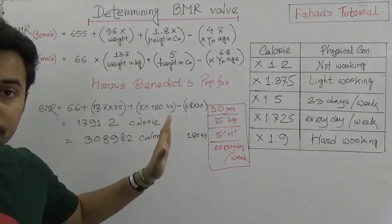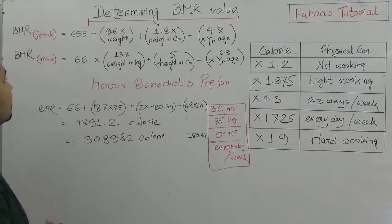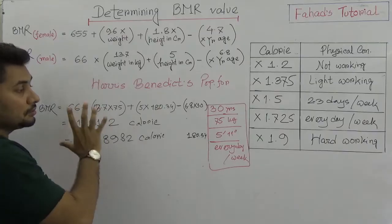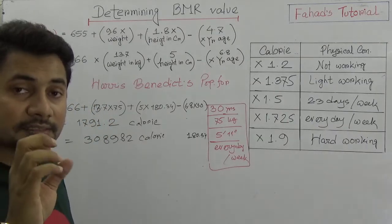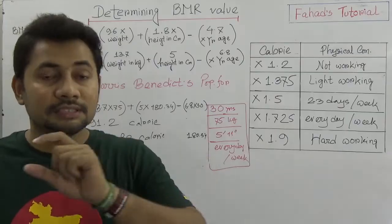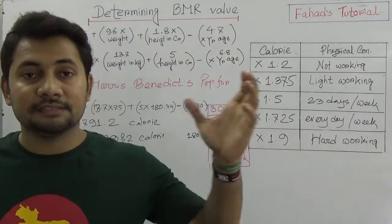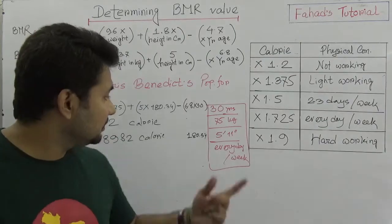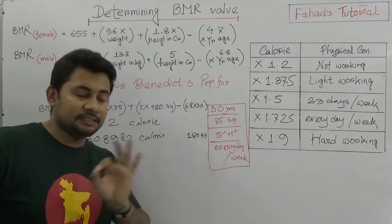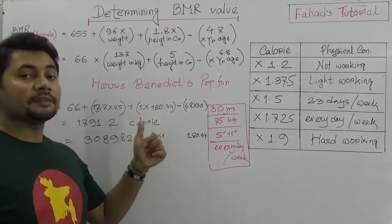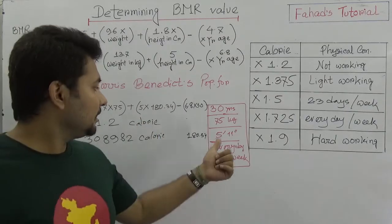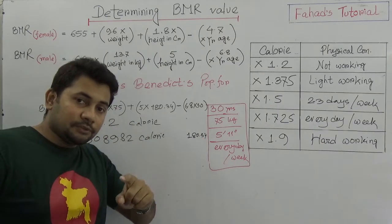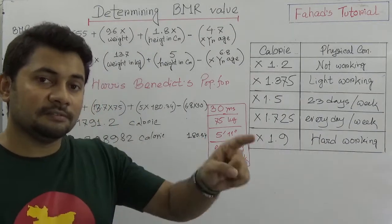I hope you can use this Harris-Benedict Formula wherever you are. The main thing is that when in your questions someone's personal data is given — like body weight, height, and age — you need to use the formula. If height is in centimeters, fine, use it directly. But if given in feet and inches, then you need to convert it to centimeters.